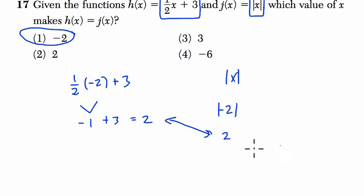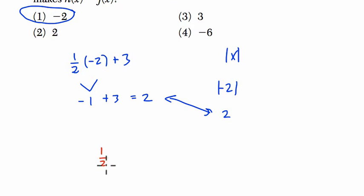Another way to do it is algebraically, and then we'll show the graphing calculator. So if we have 1 half of x plus 3 is equal to the absolute value of x...